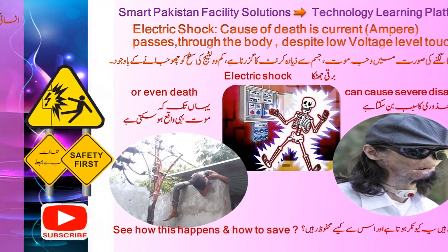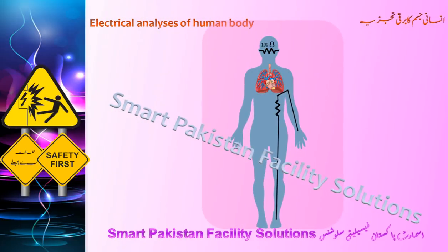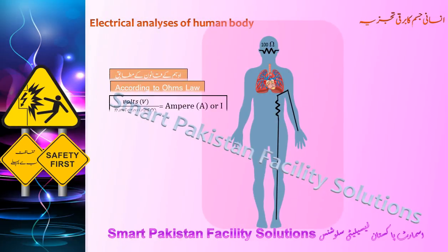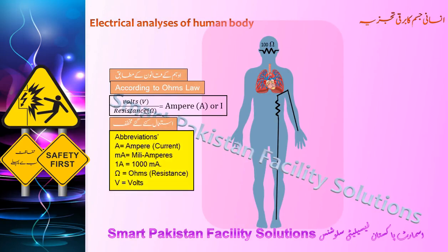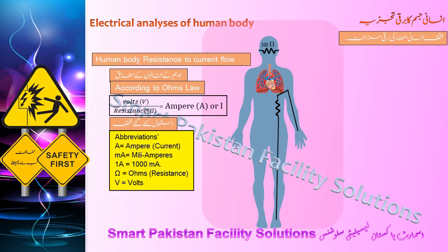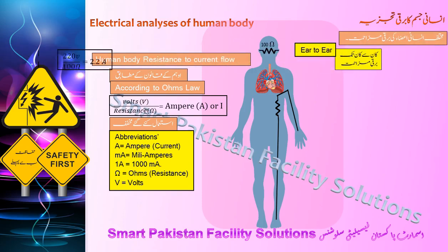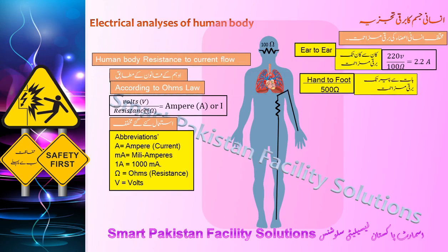This is the electrical analysis of the human body. Here is Ohm's law and the abbreviations used in this analysis. These calculations are based on 220 volts. Ear-to-ear resistance is 100 ohms, which can pass 2.2 amps.